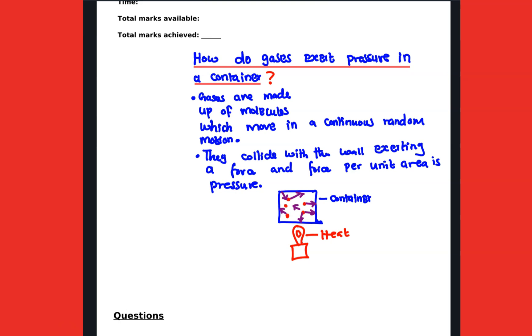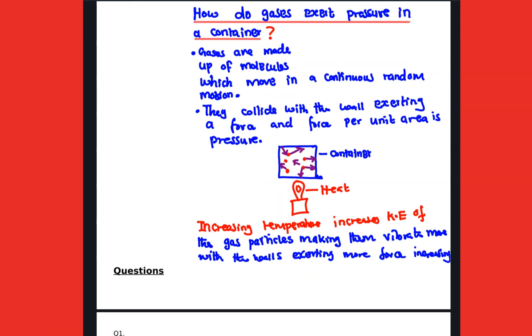Now how does temperature or heat, when heat is introduced, how does it affect the pressure in a gas? So we are going to say increasing temperature increases the kinetic energy of the gas particles, making them vibrate more frequently and exerting more force, hence increasing pressure. I believe you've benefited, I believe you've learned something new, and don't forget to subscribe. See you in the next video.